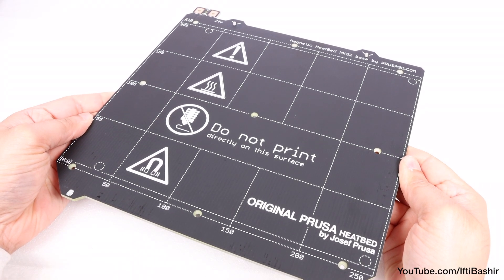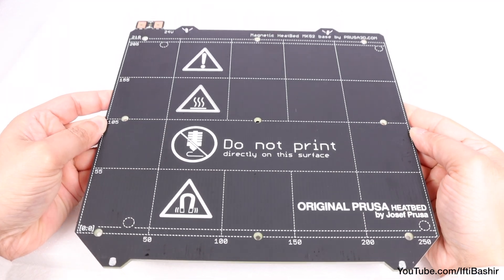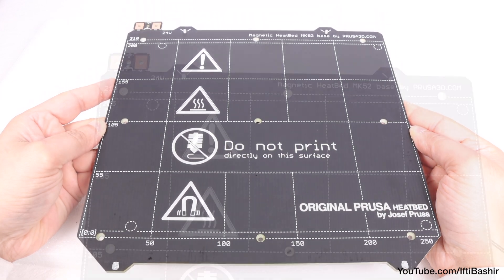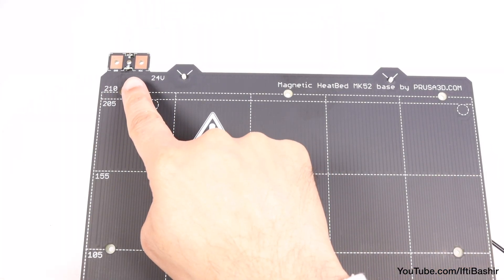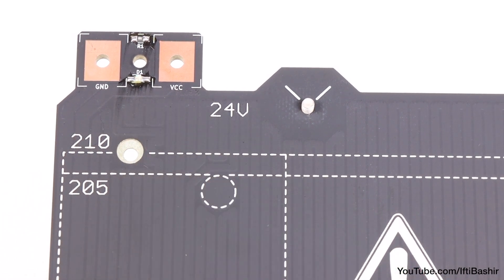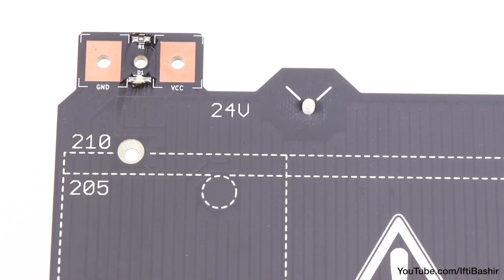We'll start with the actual heat bed itself, which looks pretty much identical to the heat bed of the Mark IV. On the top corner we have our connectors, labeled GND and VCC. It's very important we attach cables in the correct orientation here.